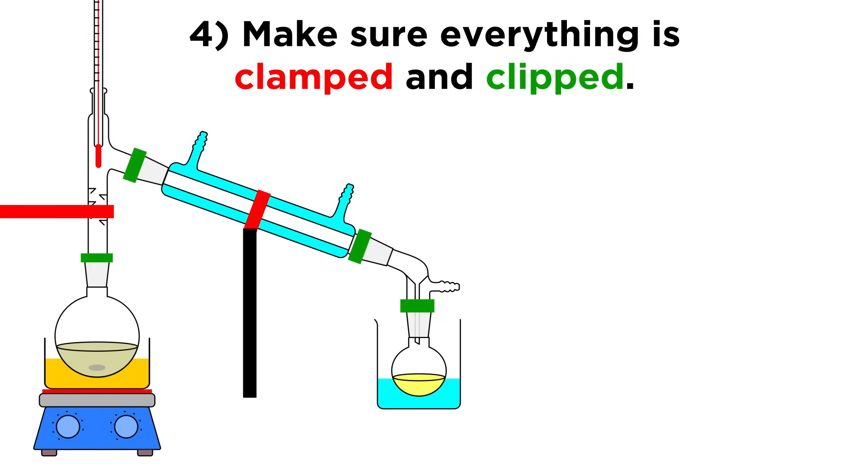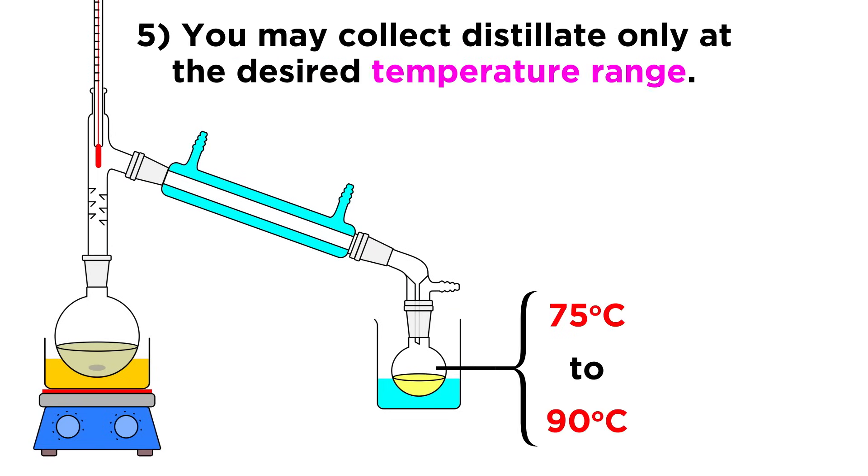Fourth, make sure every piece of glassware is clamped properly, especially the condenser. Clips should connect everything. And lastly, it's sometimes a good idea to just collect distillate at the desired temperature range that corresponds with the boiling point of what you want. This will minimize contamination.